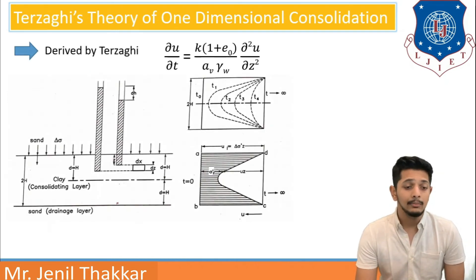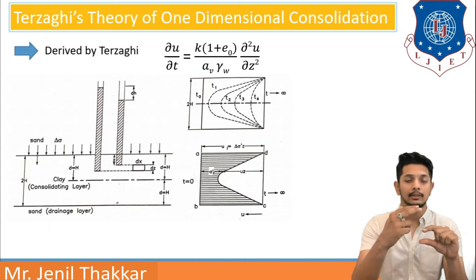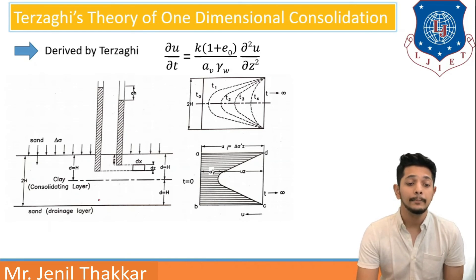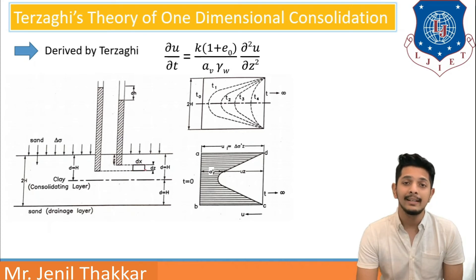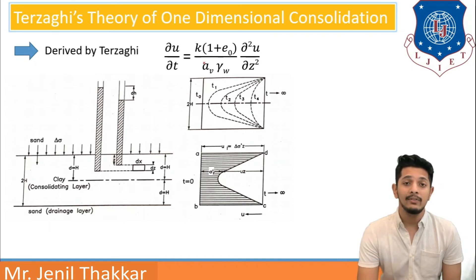Let us move further and understand Terzaghi's theory. Here, in this diagram, you can see the clay layer is in between two sand layers. Clay layer is consolidating layer here. We have assumed some element of size dx by dz here. In other two diagrams, you can see intensities of time as well as degree of consolidation. Here, Terzaghi has empirically derived the formula: del u by dt equals k(1 plus e0) upon av into gamma w into del square u by del z square.